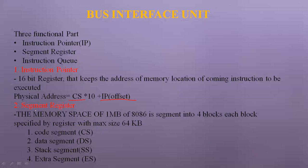The 8086 architecture has four types of segment registers: code segment, data segment, stack segment, and extra segment. The total memory space is 1 megabyte. Each segment register has a size of 64 kilobytes — code segment 64 KB, data segment 64 KB, stack segment 64 KB, and extra segment 64 KB — totaling 1 MB.